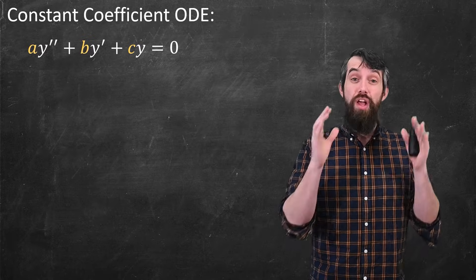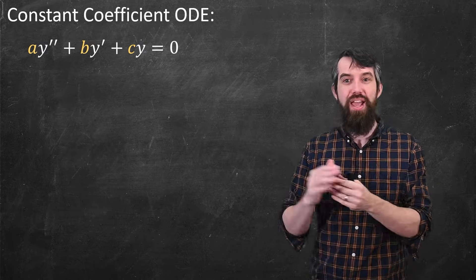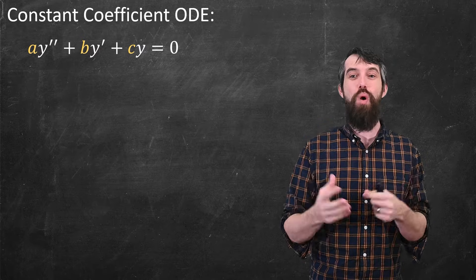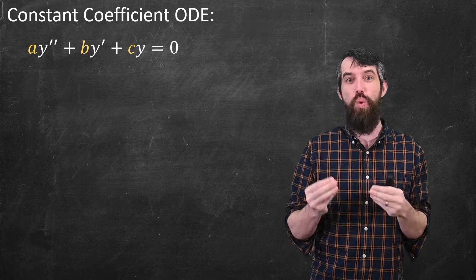In this video, I'm going to show you how to solve constant coefficient differential equations like this one. This is a constant a times y double prime, a constant b times y prime, and a constant c times y equals zero.